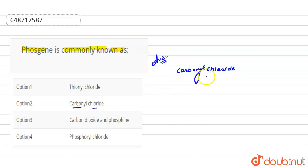Phosgene is COCl2. This is the chemical formula for carbonyl chloride and it is poisonous gas.